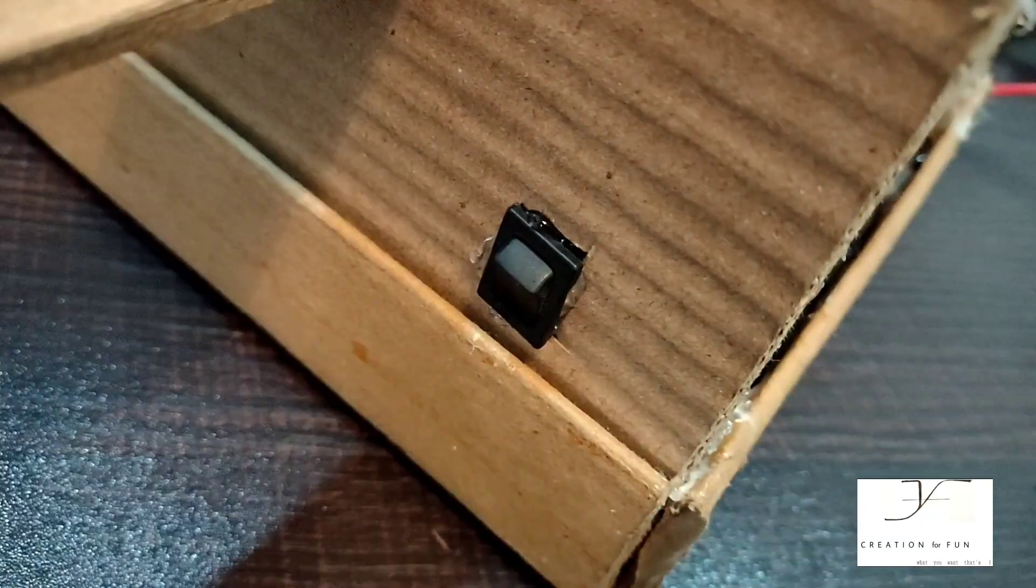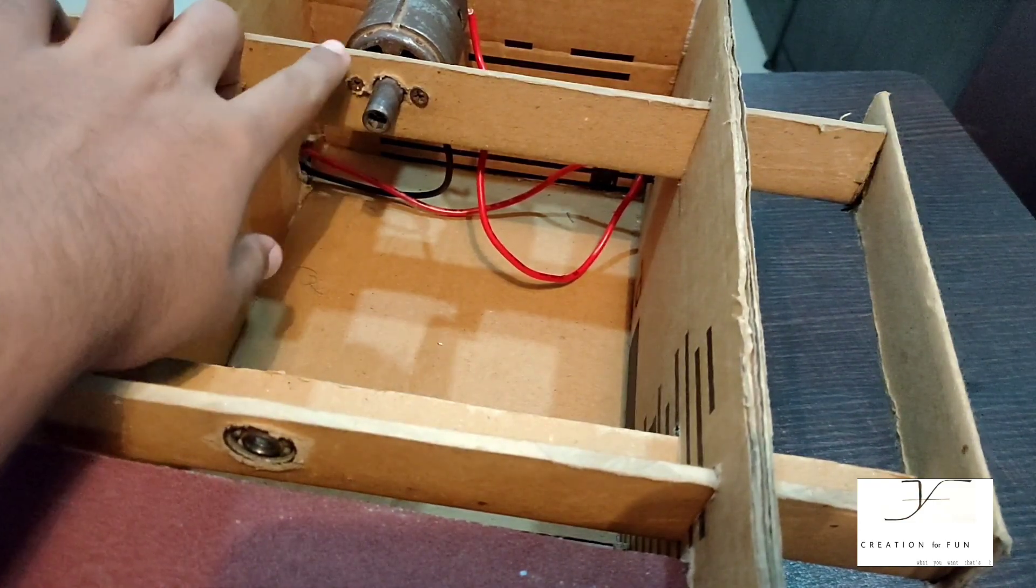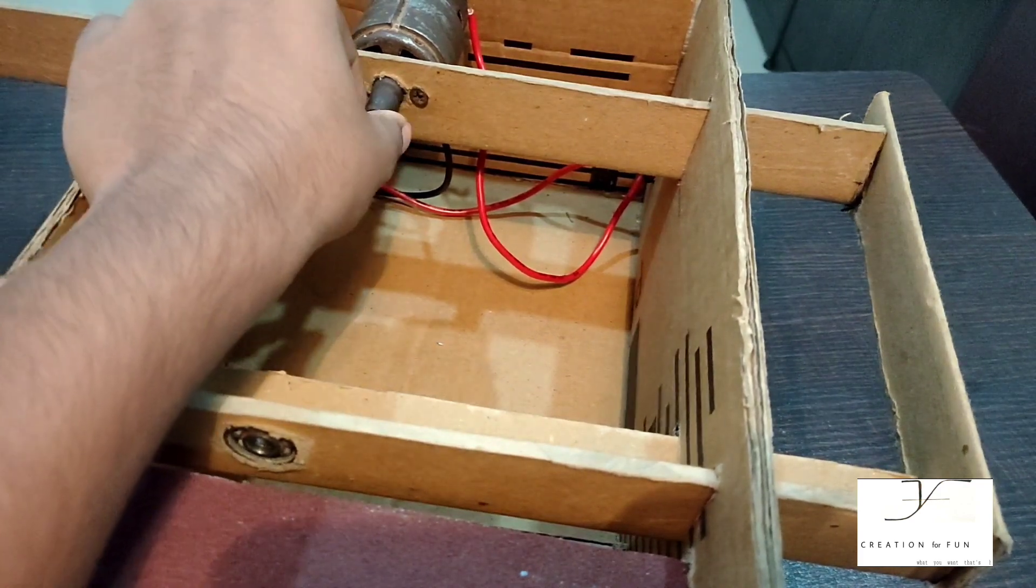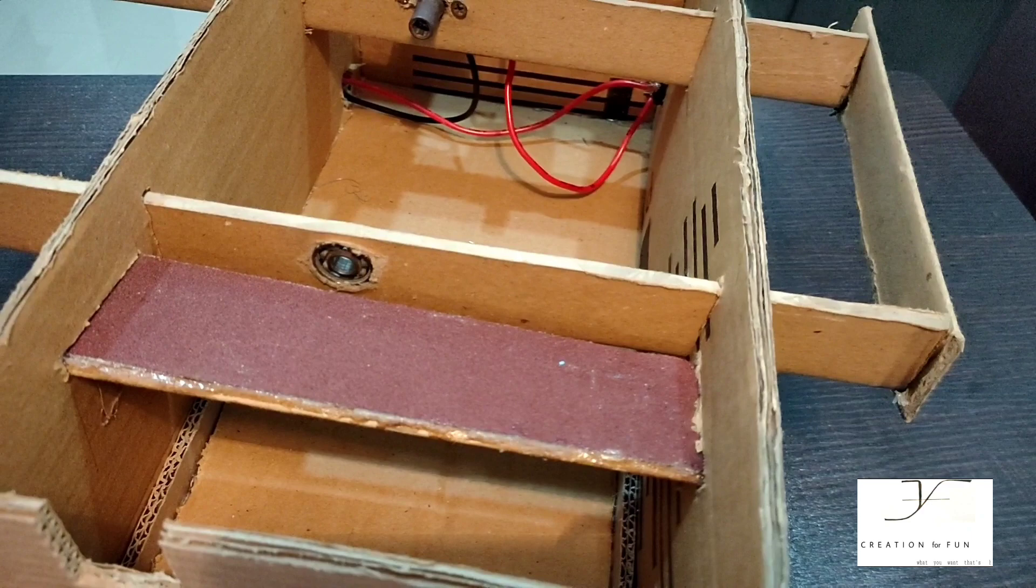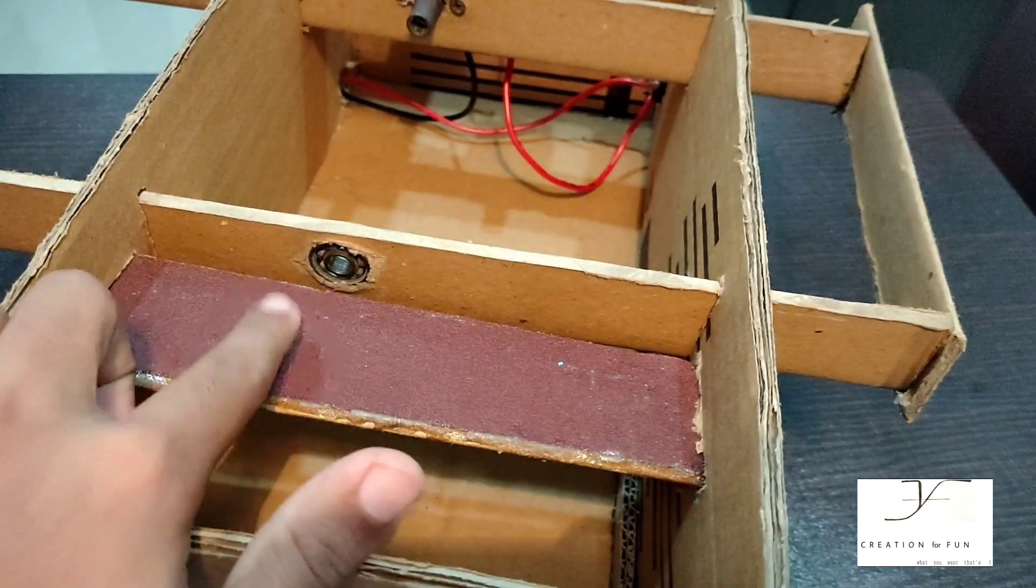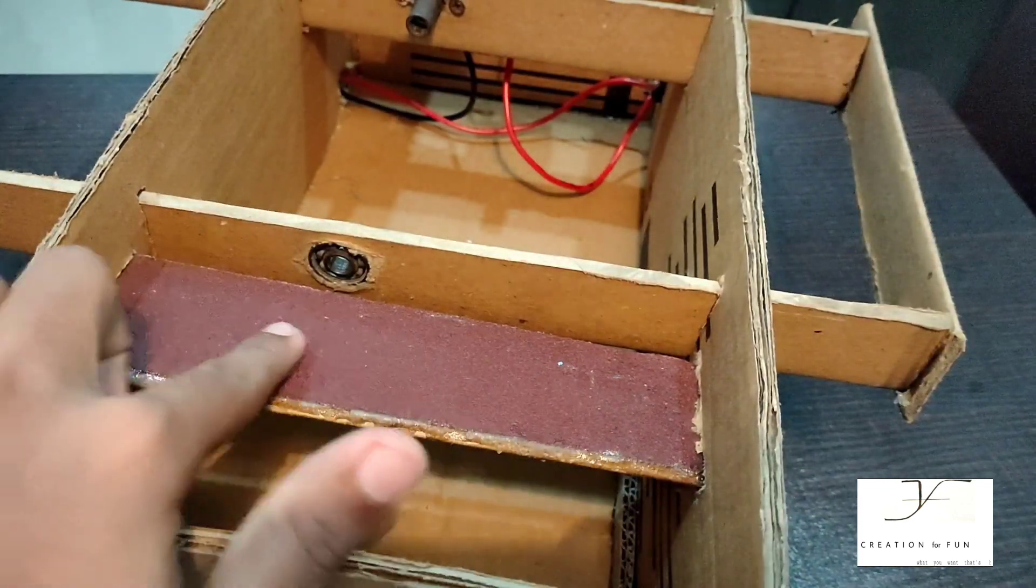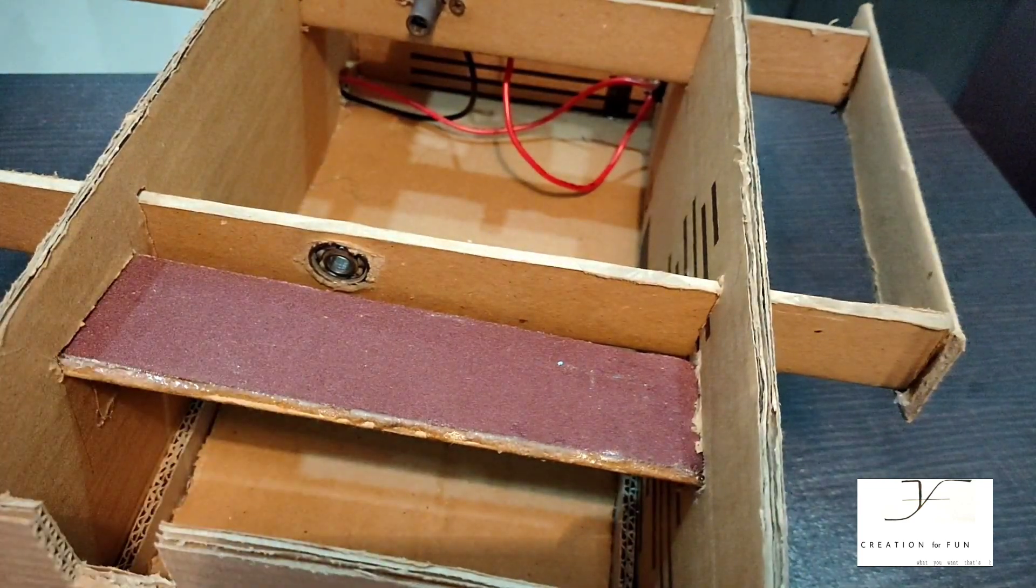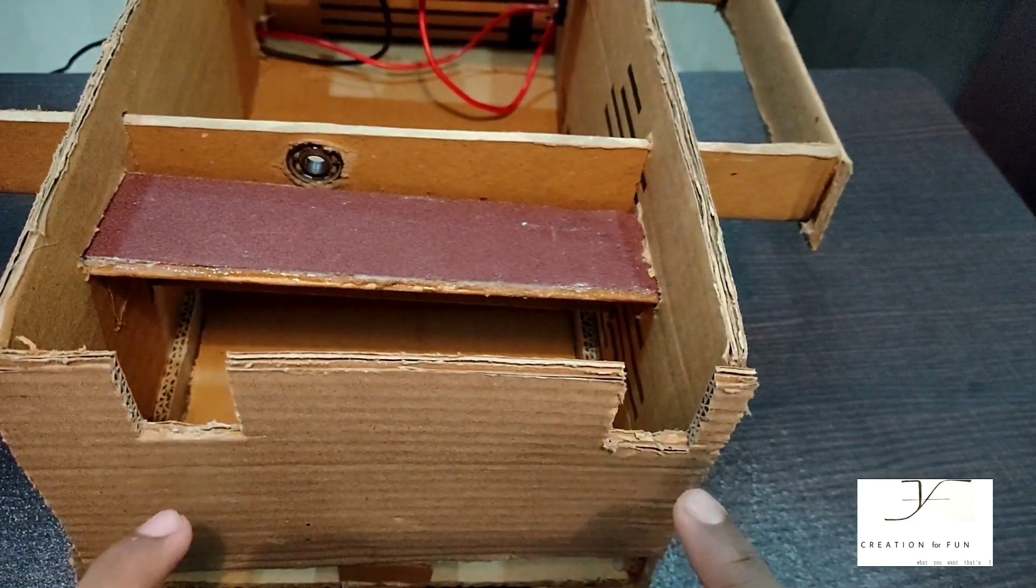Now we will solder the wires to complete the pencil sharpening machine. We mount it and use the tip of the ball bearing for stability. Now we can use the pencil sharpening machine.